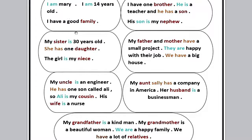هنعرف إن شاء الله بعض الكلمات الخاصة بالعائلة. الجملة بتقول: I am Mary. I am 14 years old. لو لاحظنا في الجمل هنلاقي بنقول I am. قلنا في الدرس التعفير بتوبين am معناها يكون بتستخدم مع السابجكت I. بعد كده بنقول I have a good family. I have يعني انا عندي أو أنا أملك. برضو قلنا إن I have بتستخدم مع السابجكت I.